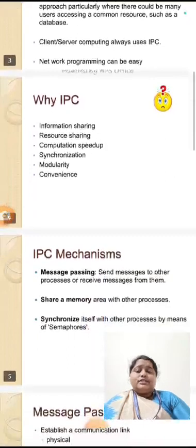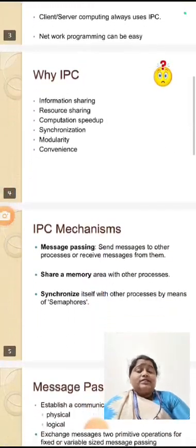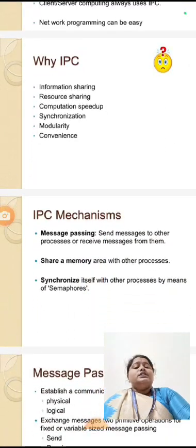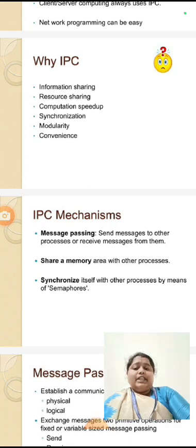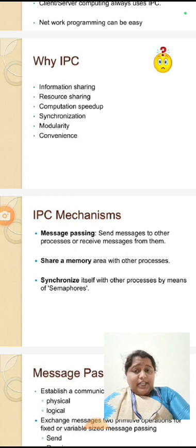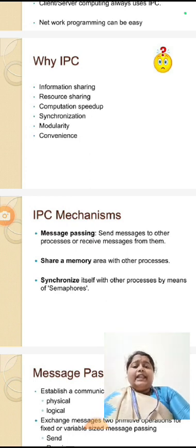Why inter-process communication? What is the purpose of using inter-process communication? Inter-process communication is mainly used for information sharing, resource sharing, computation speed-up, synchronization, modularity, and convenience.